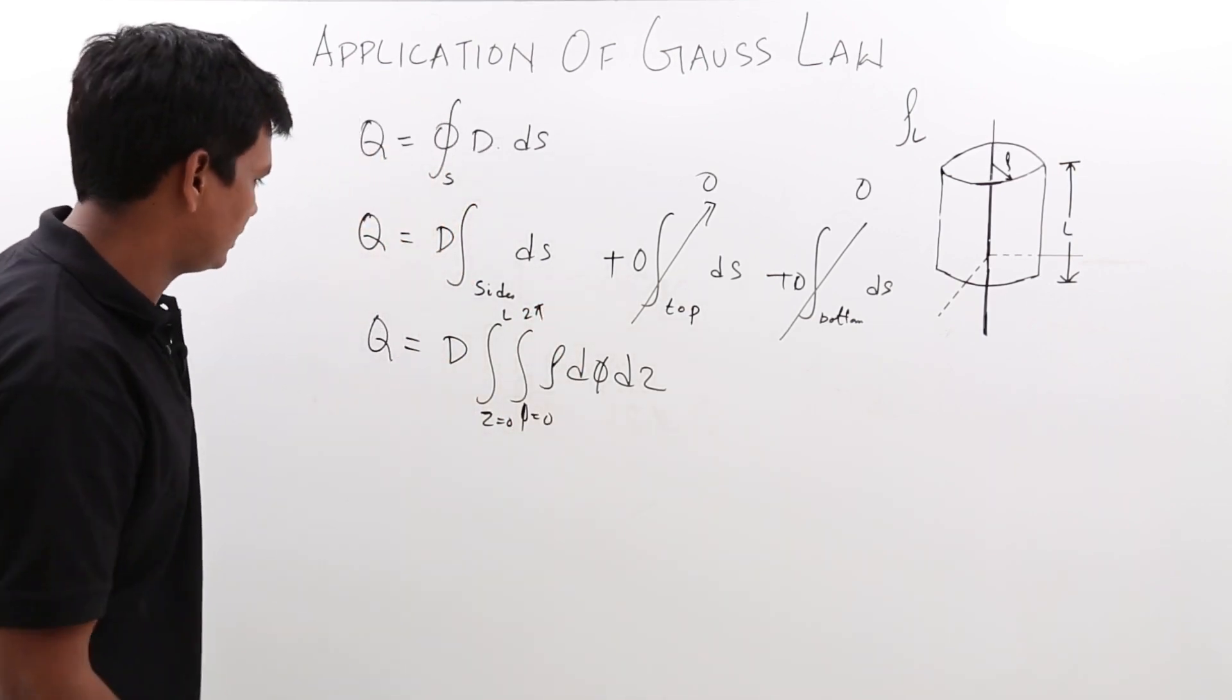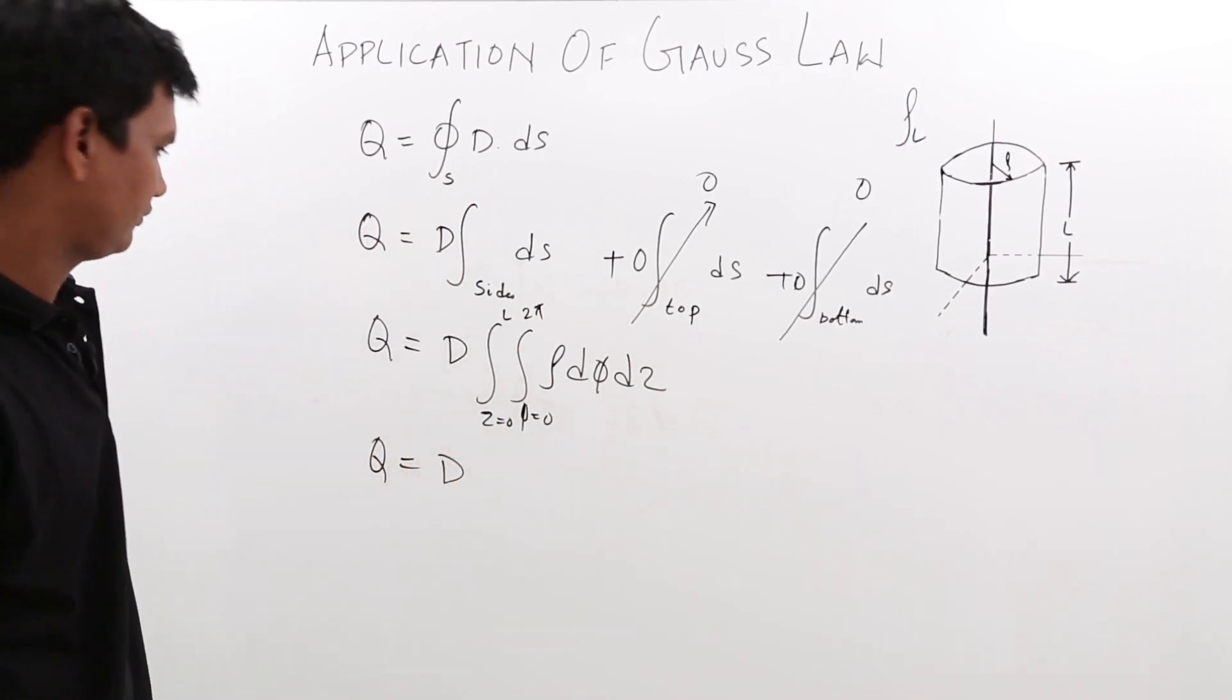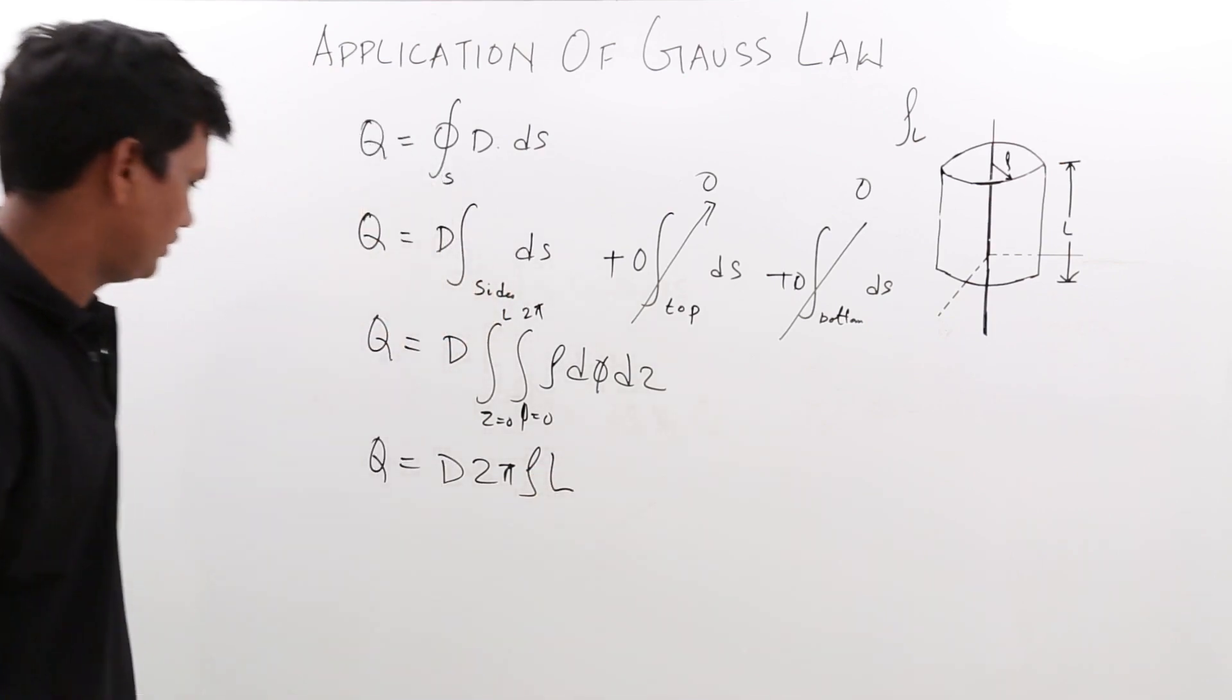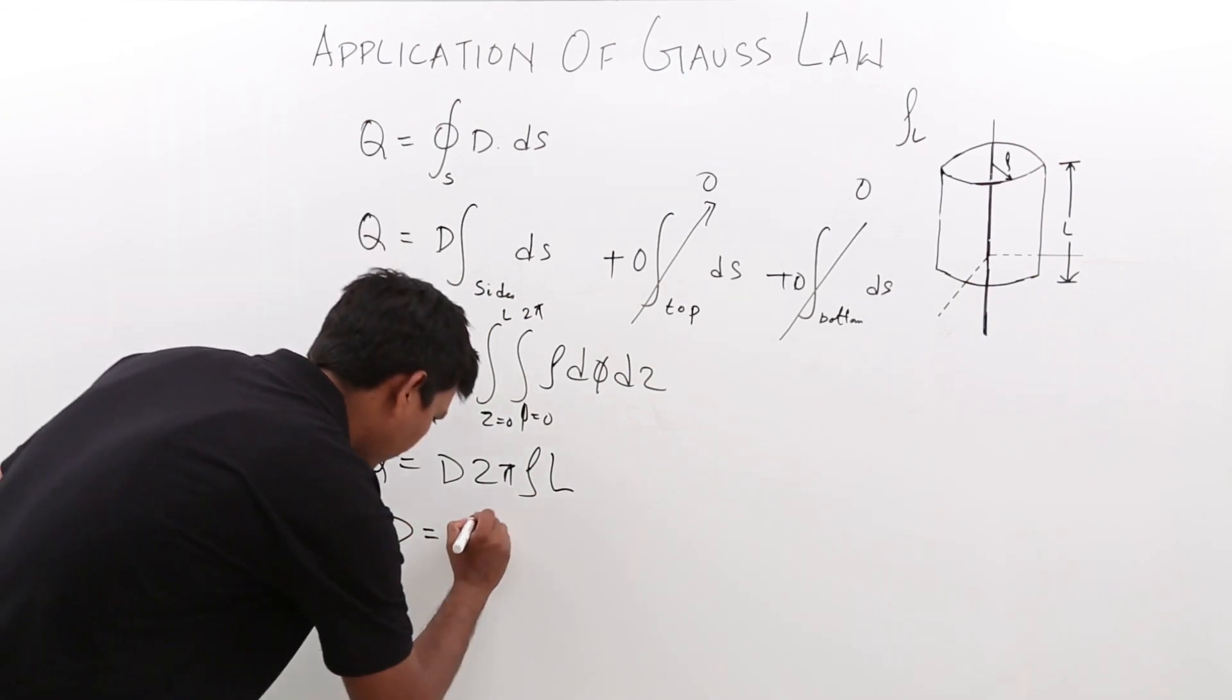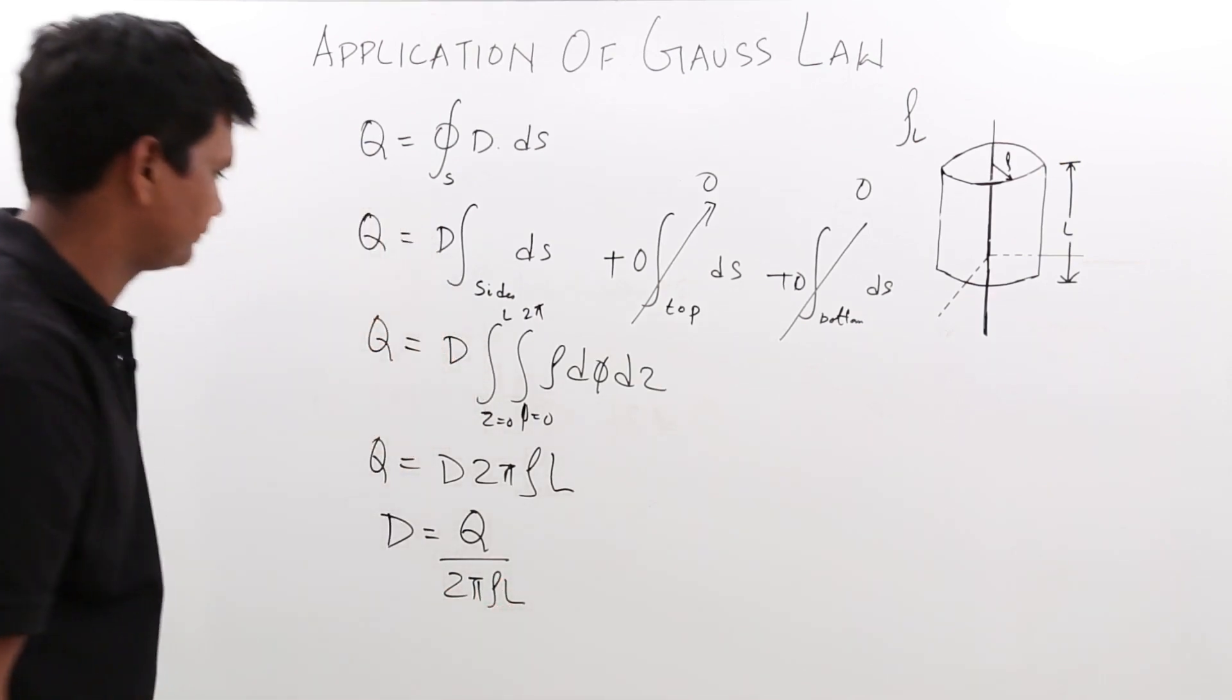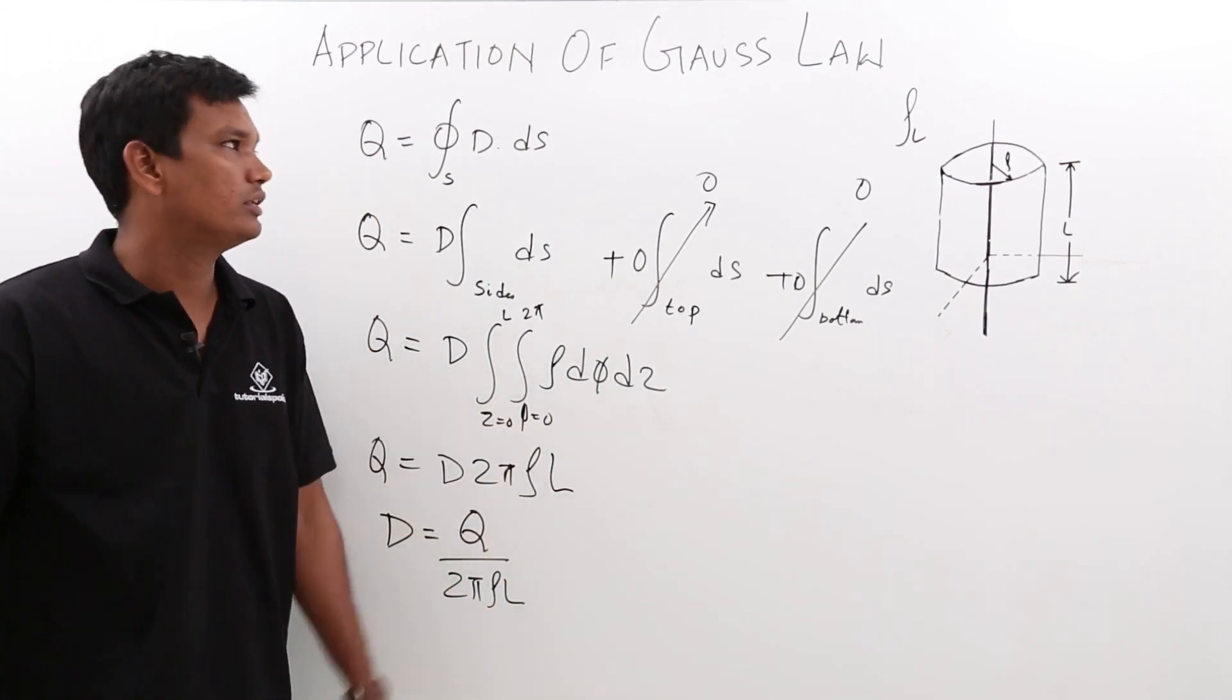If I integrate what I will get is q equals D 2 pi rho and l. So D would be nothing but q divided by 2 pi rho l. We have concluded the displacement flux density for this.